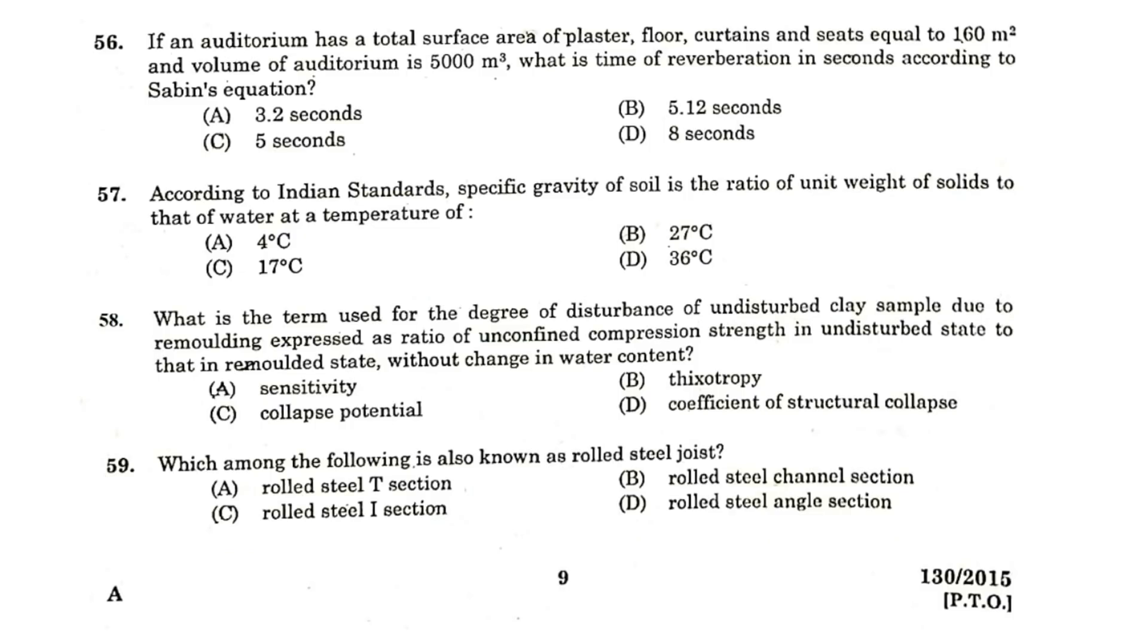If an auditorium has a total surface area of plaster, floor, curtains and seat equal to 160 m² and the volume of auditorium is 5000 m³, what is the time of reverberation in seconds according to Sabin's equation? 5 seconds.